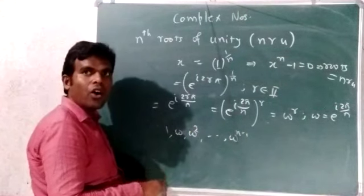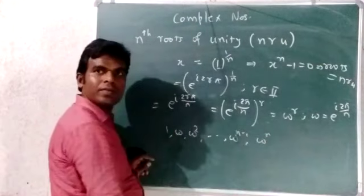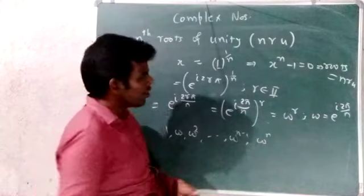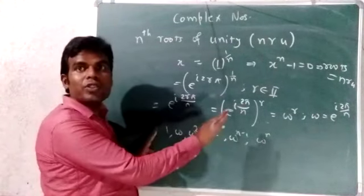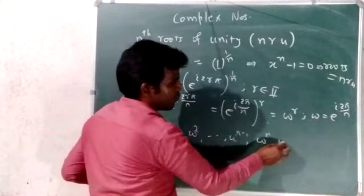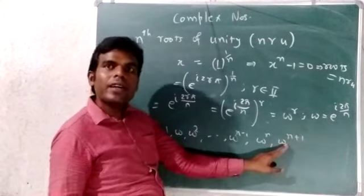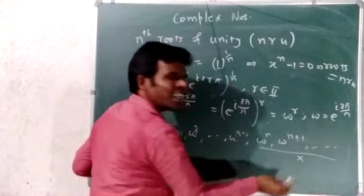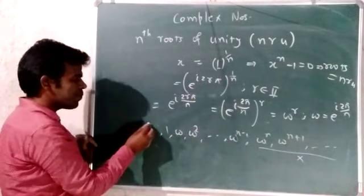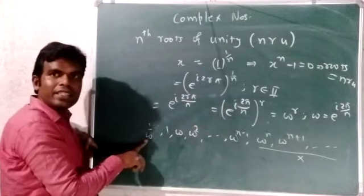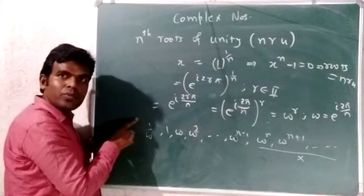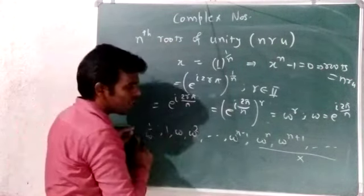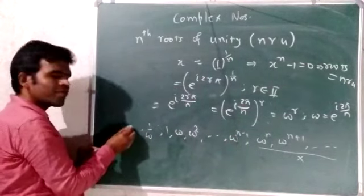These are the distinct values. The other values overlap — for example, omega raised to n equals 1, which is the same as the starting value. And omega raised to n plus 1 equals omega raised to n times omega, which equals omega — so it overlaps with omega. Similarly, writing negative r values gives 1 upon omega and so on, which are not new values. So there are no new values beyond these n distinct ones.